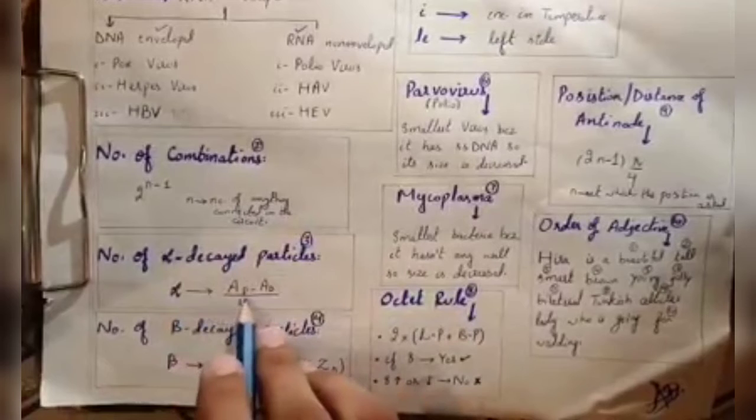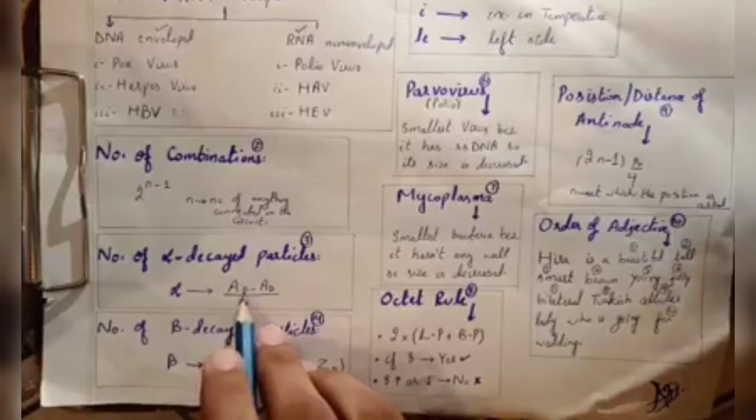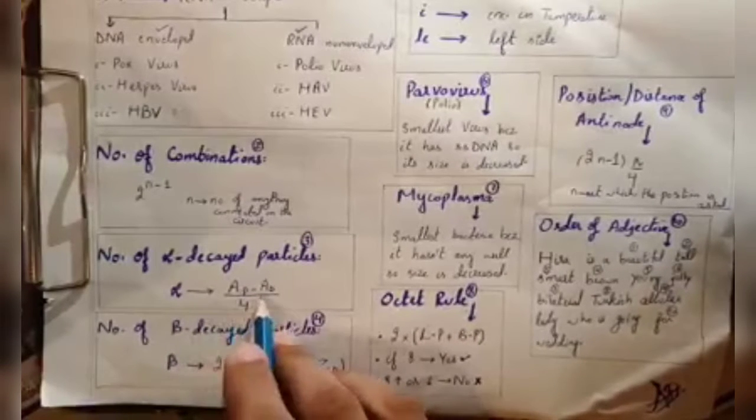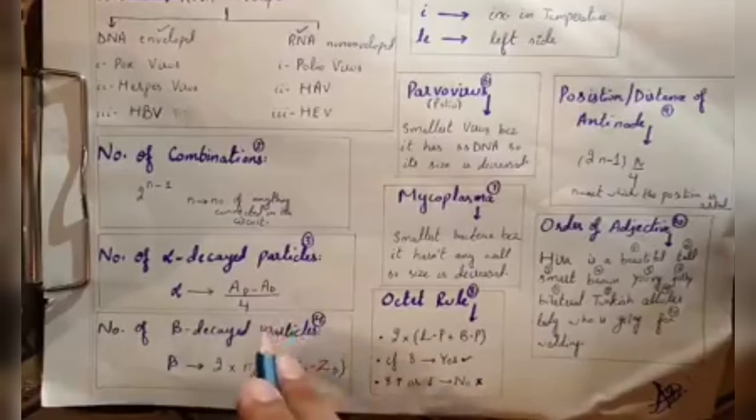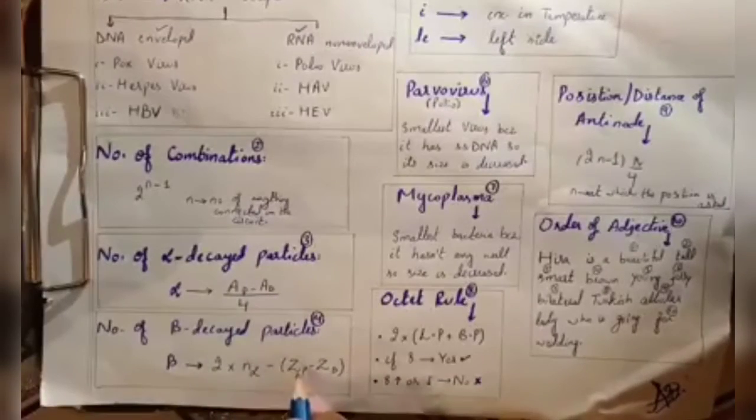For the number of alpha decayed particles, you can give 2-3 reactions or compounds. This is the relation. And this is the beta decayed particles. One thing you have to remember is parent minus daughter.